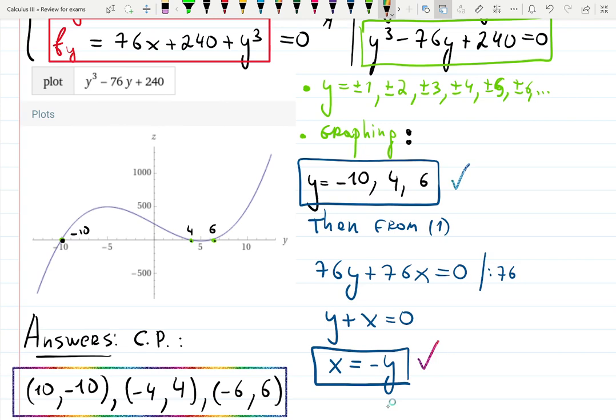And now find corresponding x values. That's how you get pairs, in this case, three pairs of points, which are all critical points for this function.